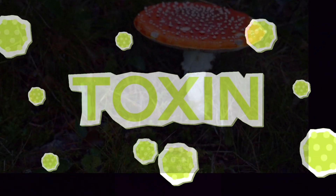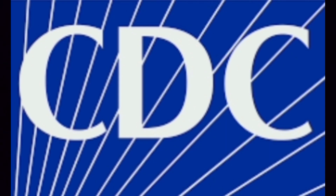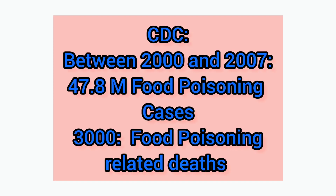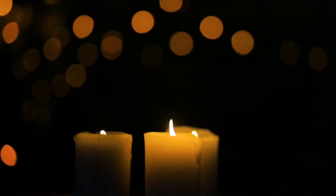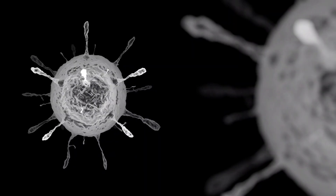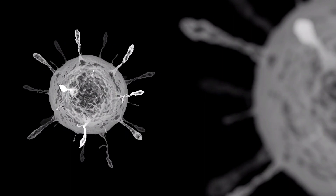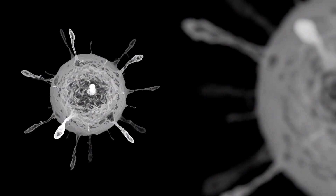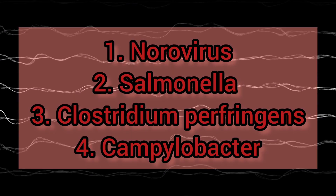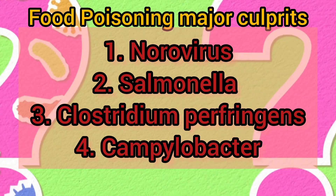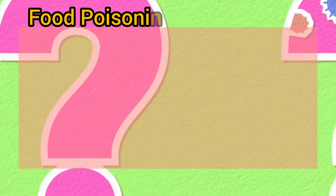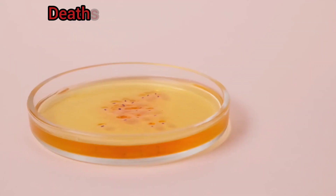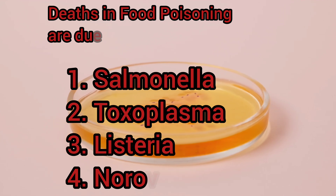A toxin is a naturally occurring organic poison produced by metabolic activities of living cells or organisms. The CDC reported that between 2000 and 2007, there were 47.8 foodborne illnesses per year in the U.S., causing more than 3,000 deaths every year. Cases were caused by 31 known species of bacteria, viruses, and parasites. The most common causes include norovirus, Salmonella, Clostridium perfringens, and Campylobacter. Leading causes of death include Salmonella, Toxoplasma, Listeria, and norovirus.